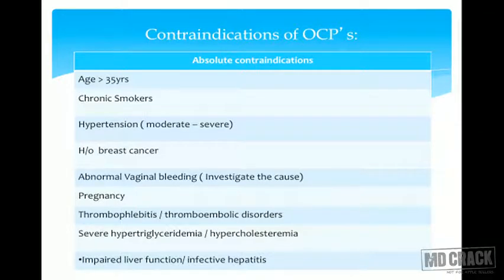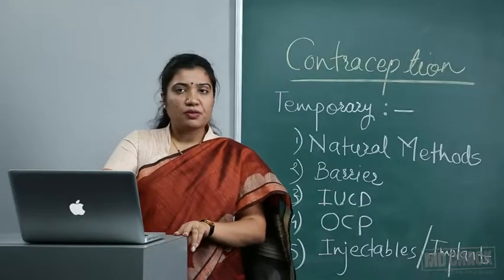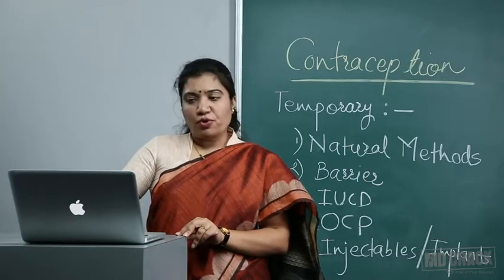Relative contraindications include migraine with aura, diabetes or gestational diabetes, hypertension, smoking, uterine leiomyoma, seizure disorder, obstructive jaundice in pregnancy, and hepatic diseases. We will never prescribe OCPs in these conditions. We finish OCPs here and will go to implants in the next session.